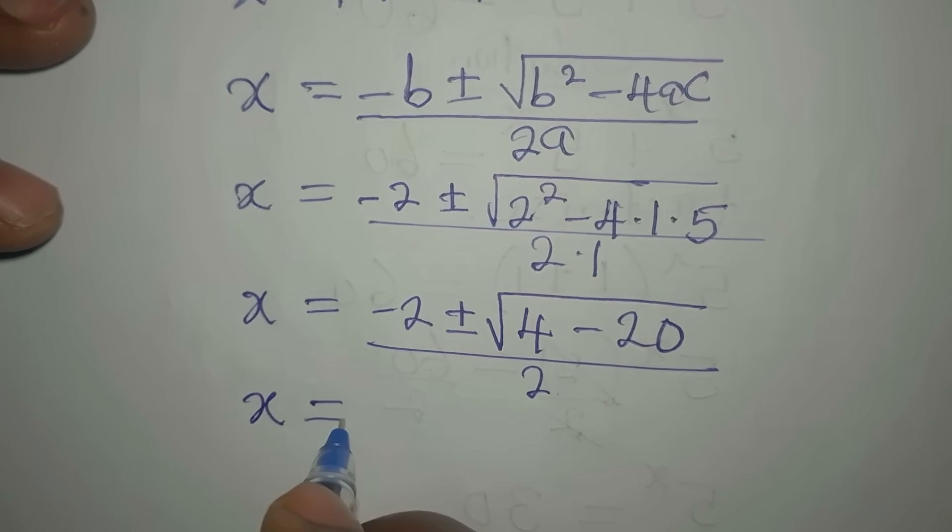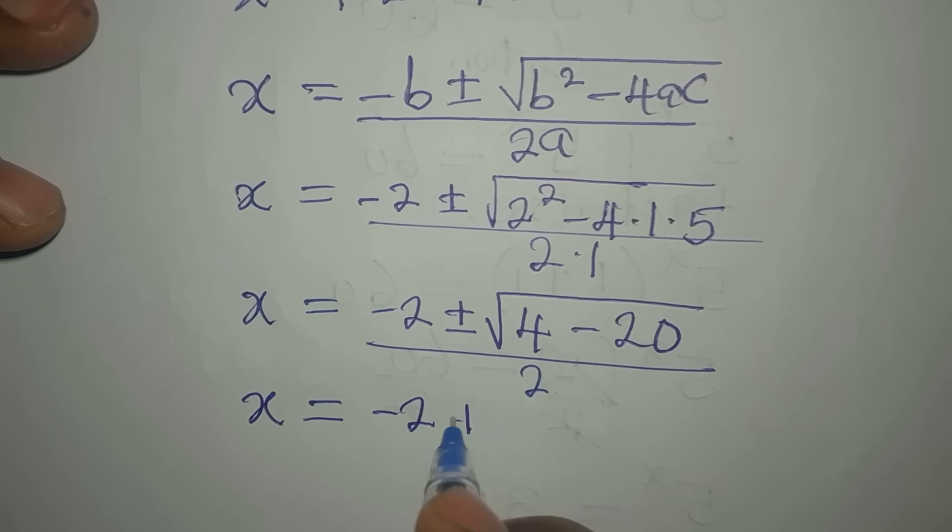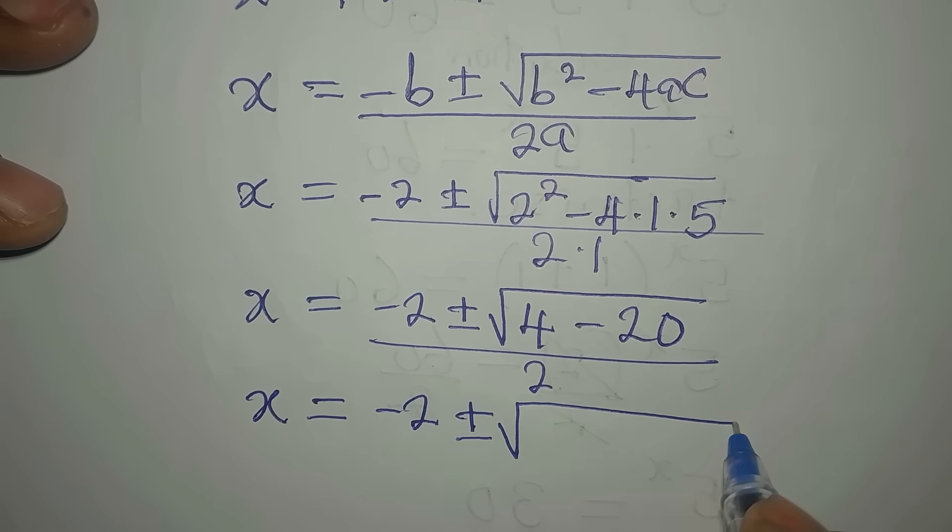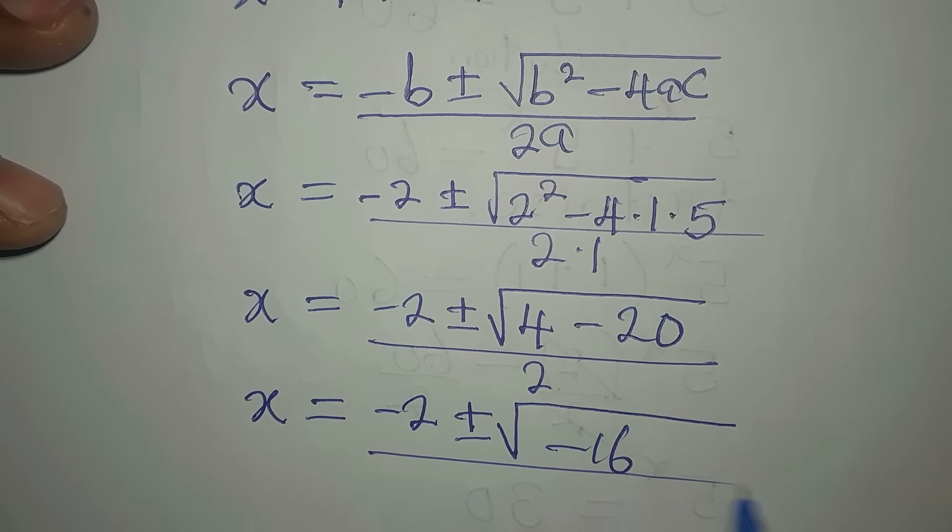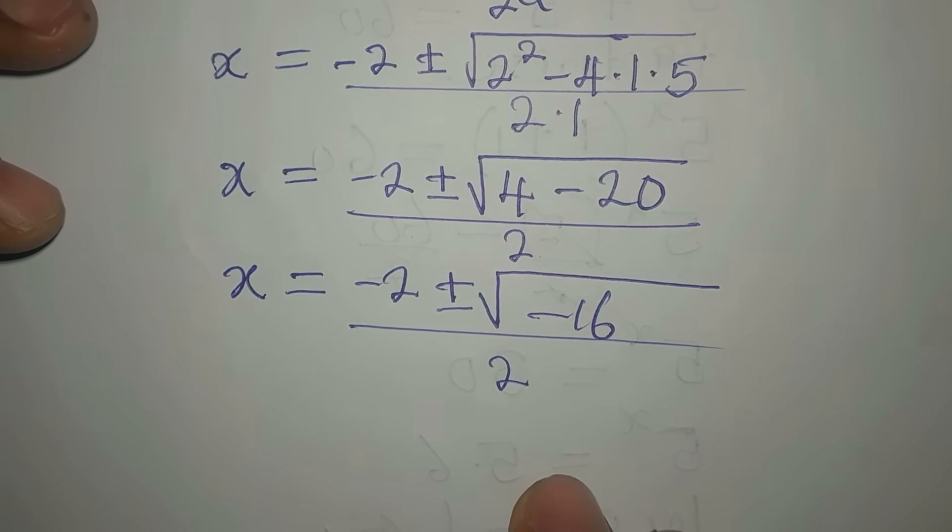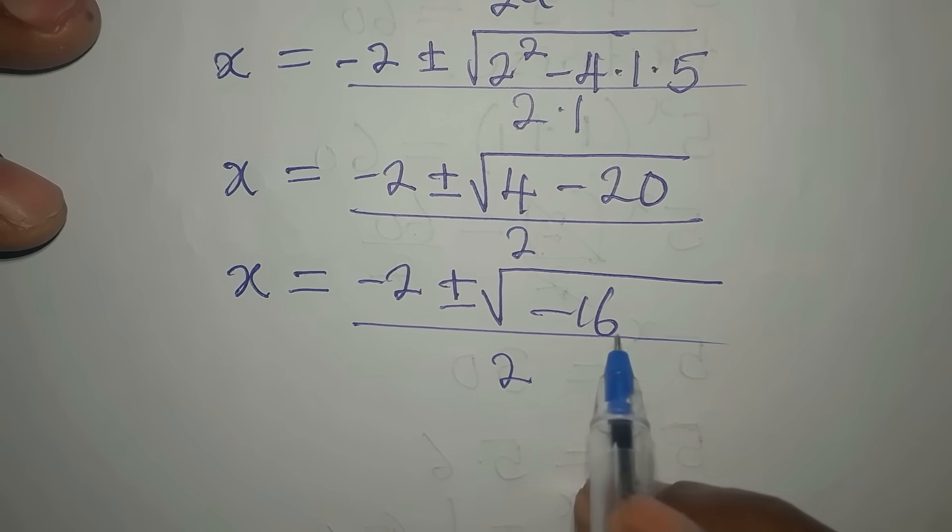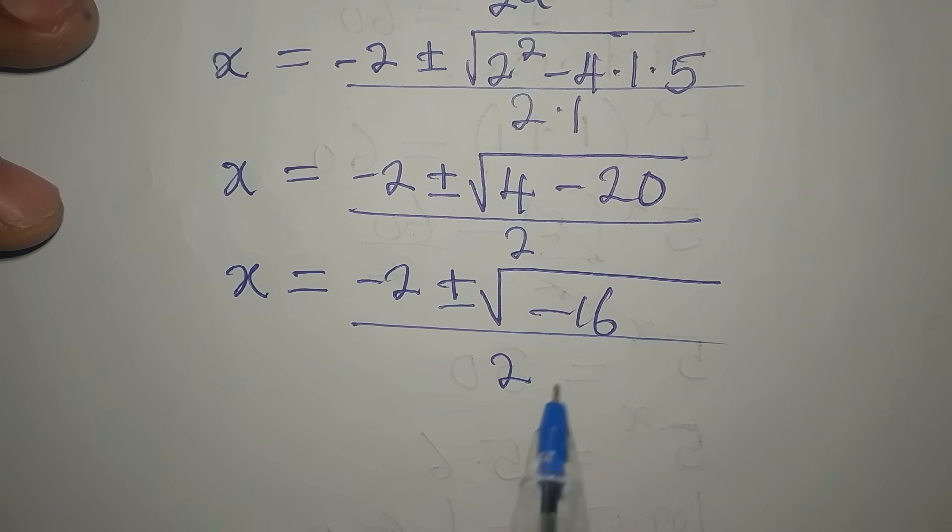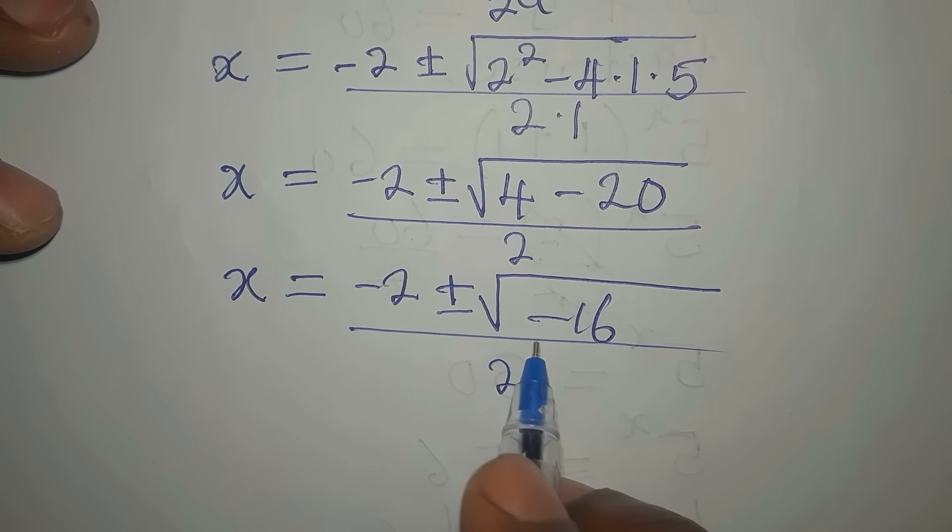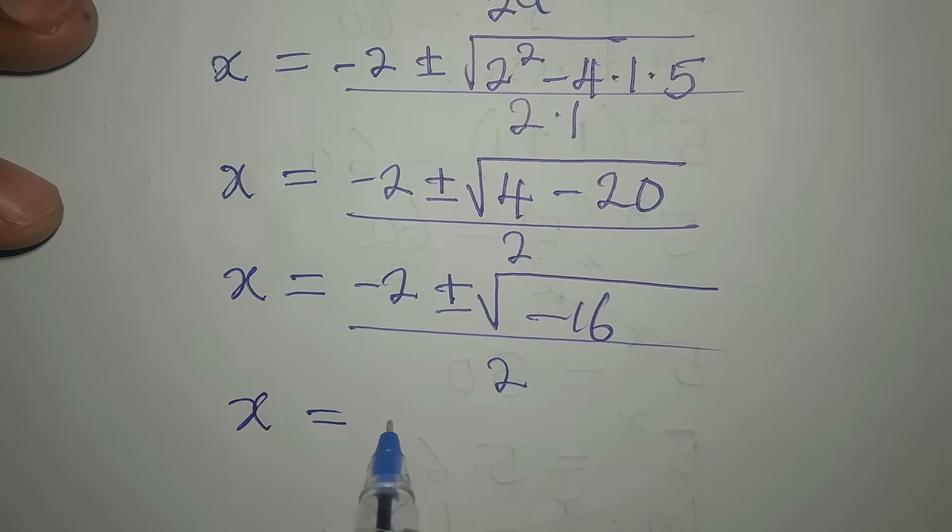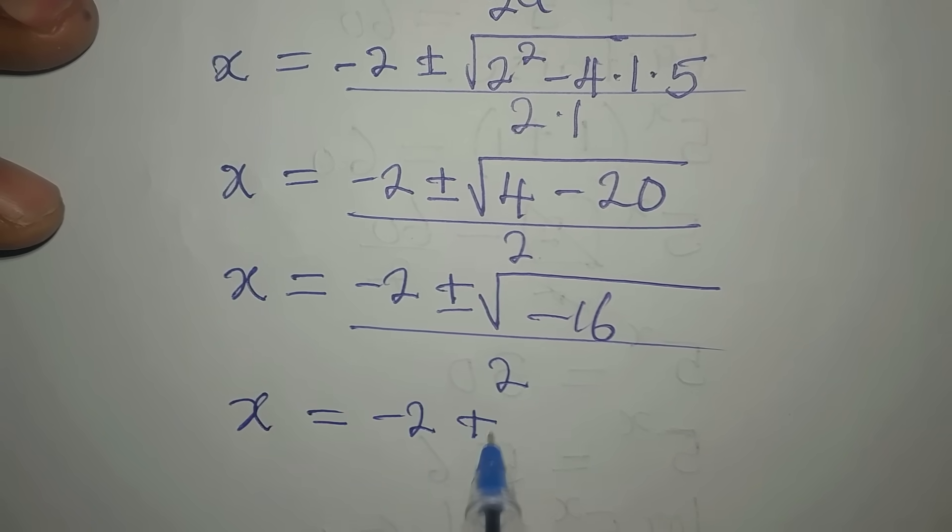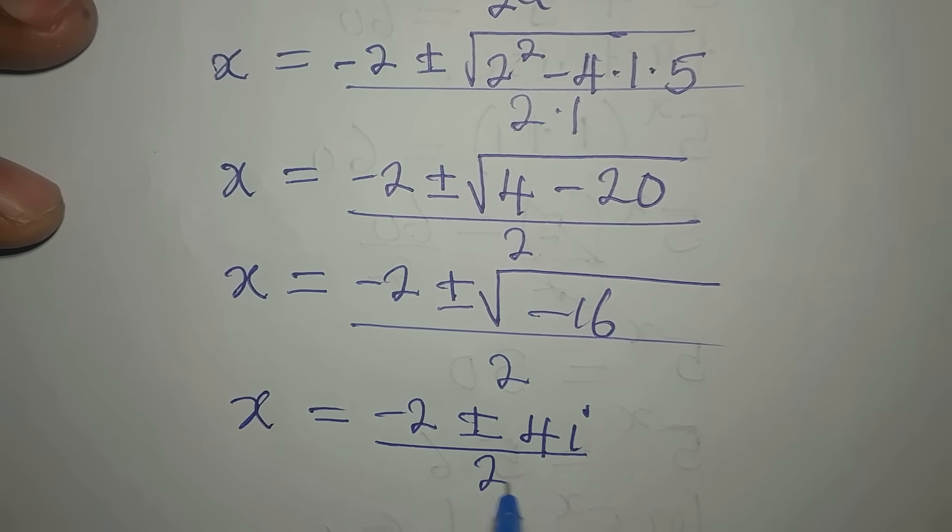Now our x is minus 2 plus or minus, we have 4 minus 20 is minus 16, then divide this by 2. Ordinarily, the square root of minus 16 is 4, but the square root of minus 16 is going to be 4i. Now our x is minus 2 plus or minus 4, then i, divided by 2.